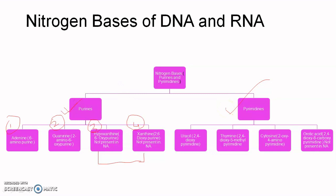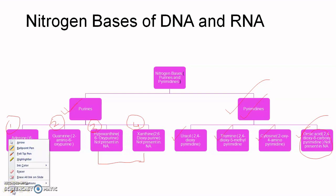The second main type of nitrogen bases are the pyrimidines. There are four types: uracil (2,4-dioxypyrimidine), thymine (2,4-dioxy-5-methylpyrimidine), cytosine (2-oxy-4-aminopyrimidine), and orotic acid (2,4-dioxy-6-carboxypyrimidine). Orotic acid is not present in nucleic acids — neither in DNA nor in RNA. The three remaining pyrimidine bases — uracil, thymine, and cytosine — are present in nucleic acids. Uracil is not present in DNA but is present in RNA instead of thymine.